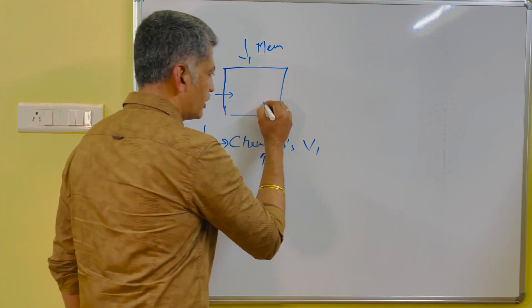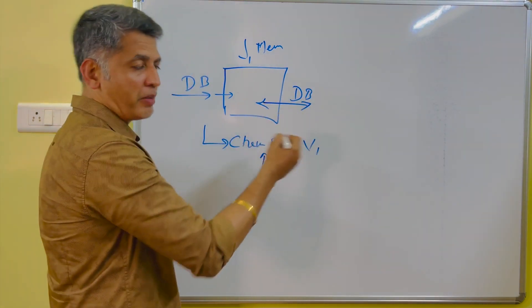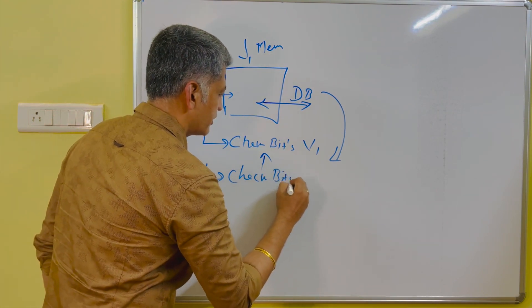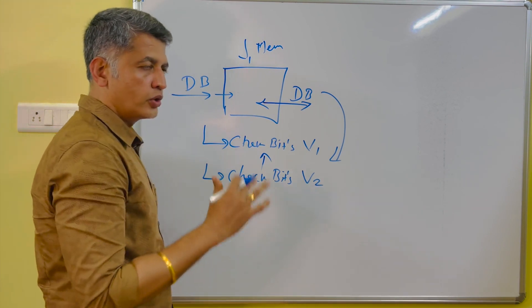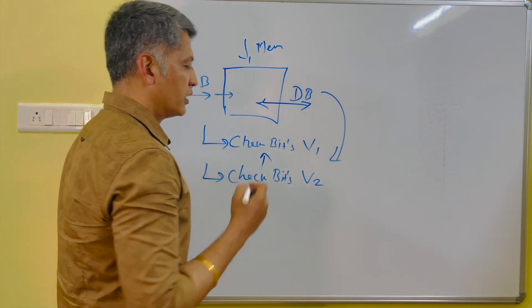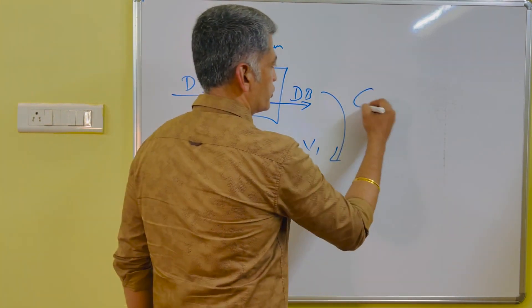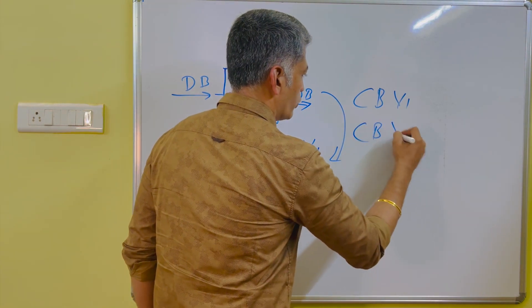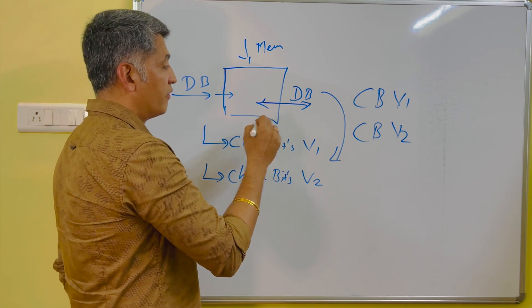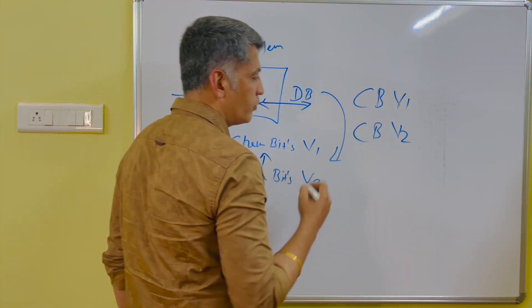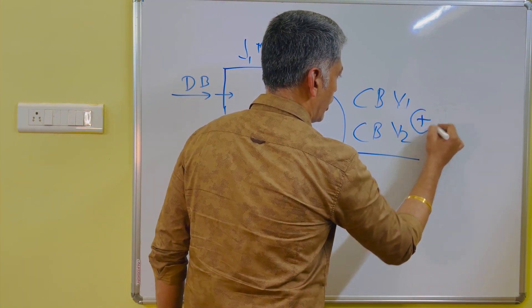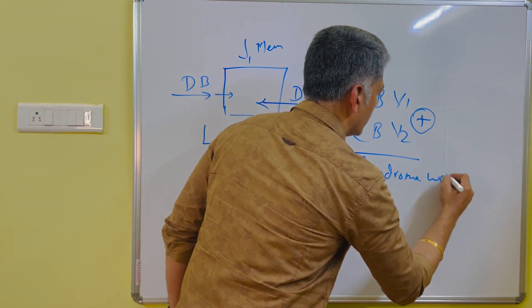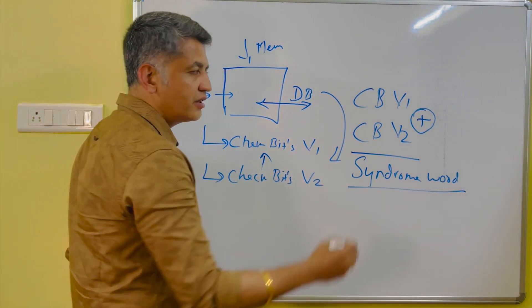At the same time, while you are retrieving the data bits from the memory, one more version will be generated — that is called check bits version 2. Now, how we are going to calculate the syndrome word? Check bit version 1 is generated while storing, check bit version 2 is generated while retrieving. You need to do the XOR operation between version 1 and version 2, and the result will be the syndrome word.